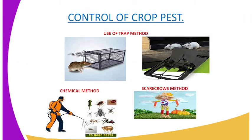Moving on to pest control, there are various methods applied in controlling pests in the farm, because they are very destructive. Method number one: you can use traps to trap rodents such as rats — you can see there are different types of traps. You can also use the chemical method, and the chemicals used are referred to as pesticides.